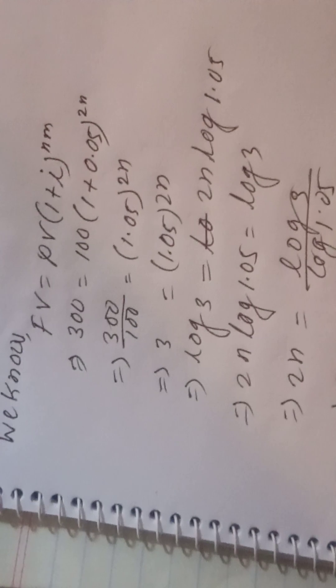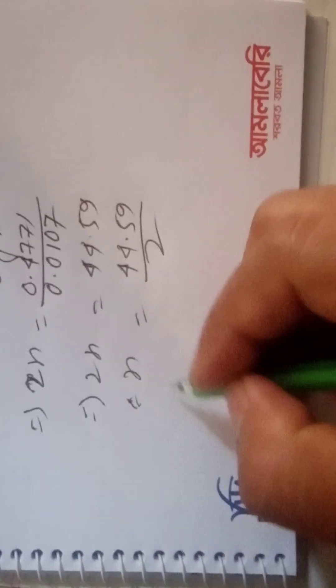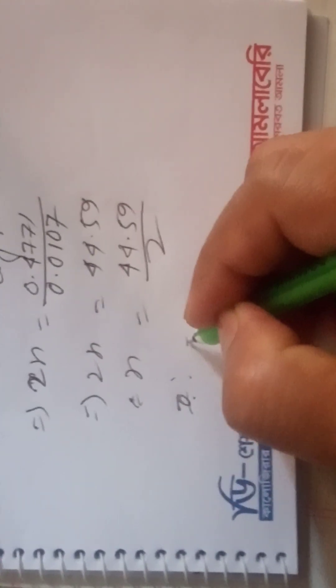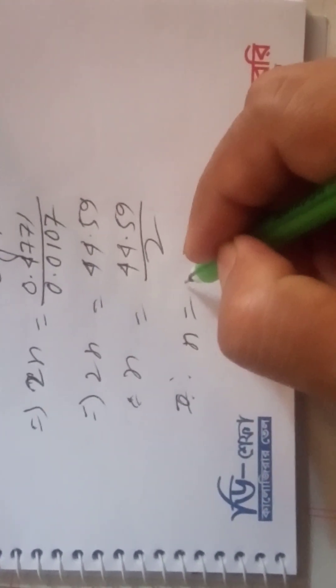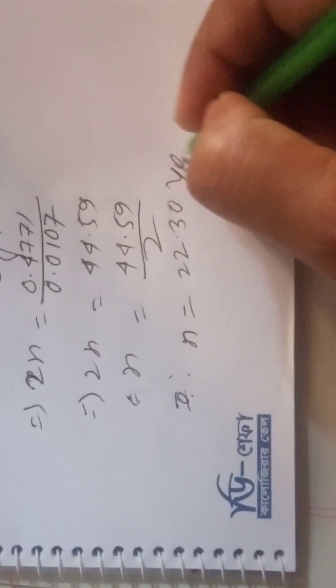So n equals 44.49 by 2. Thus, n equals 22.3 years.